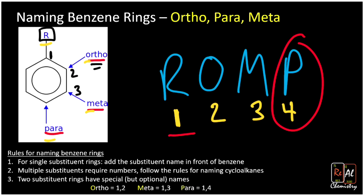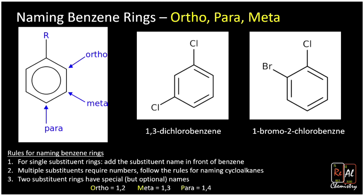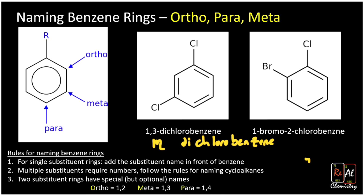Let's practice. For 1,3-dichlorobenzene and 1-bromo-2-chlorobenzene, how do we rename them using ortho, meta, and para? For dichlorobenzene, 1,3 corresponds to meta, so we can write meta-dichlorobenzene. Sometimes people abbreviate it with an italicized m-dash: m-dichlorobenzene. These are the same thing.